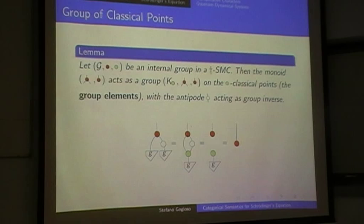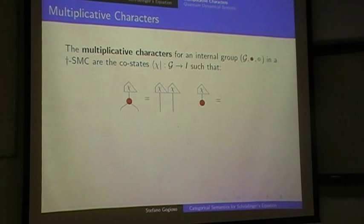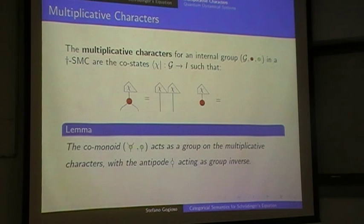Departing from Will's presentation, we call the adjoints of the red classical points multiplicative characters, because ultimately they are group homomorphisms from the red monoid to the monoid on the tensor unit. For the abelian case, they correspond to what we usually call multiplicative characters in finite-dimensional Hilbert space. The green monoid duly acts as a group on them — this is used in another work with Will on Fourier transform, where it actually plays a role.